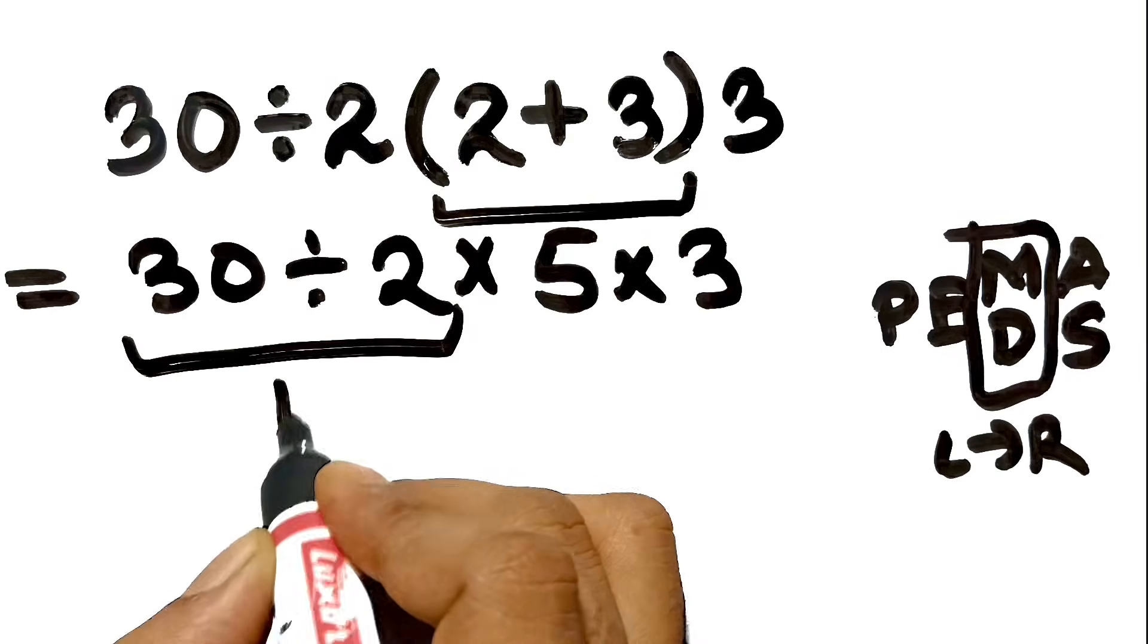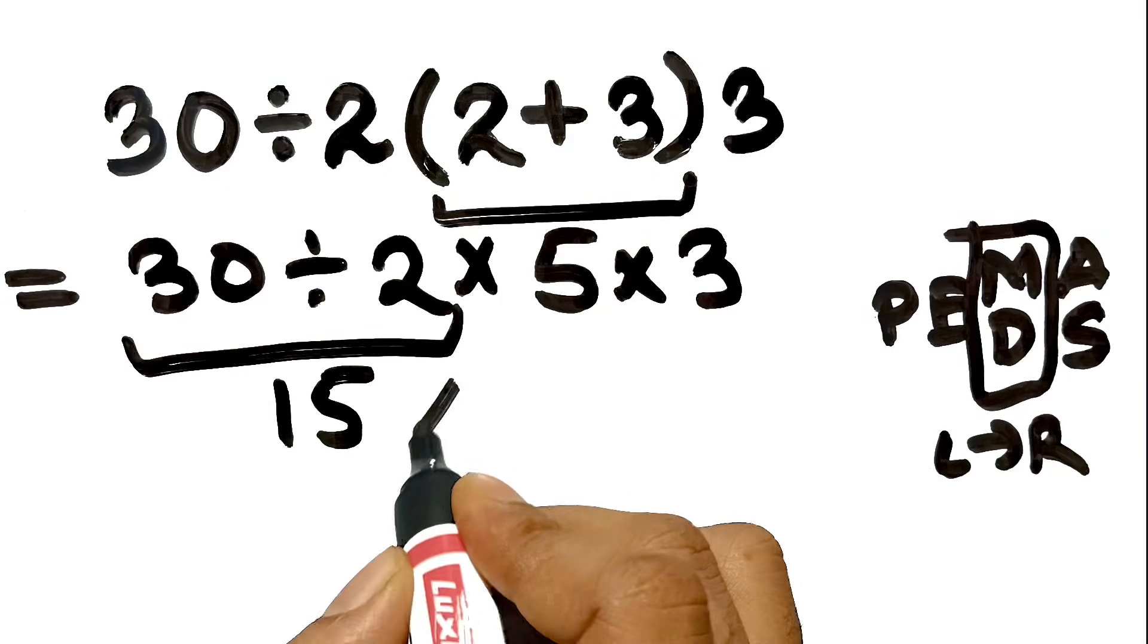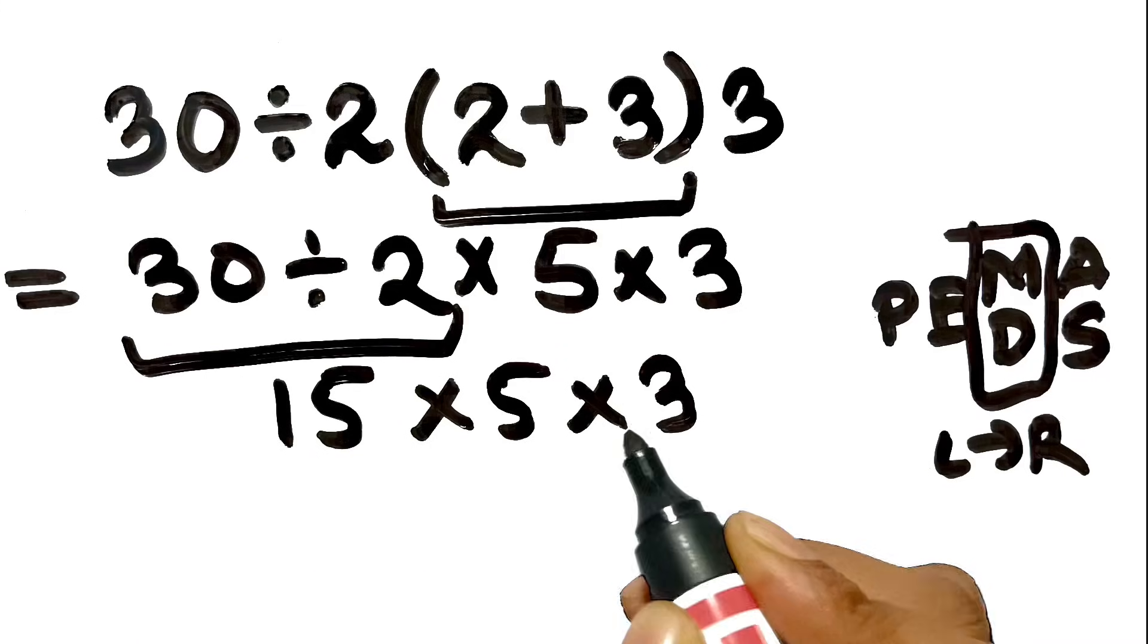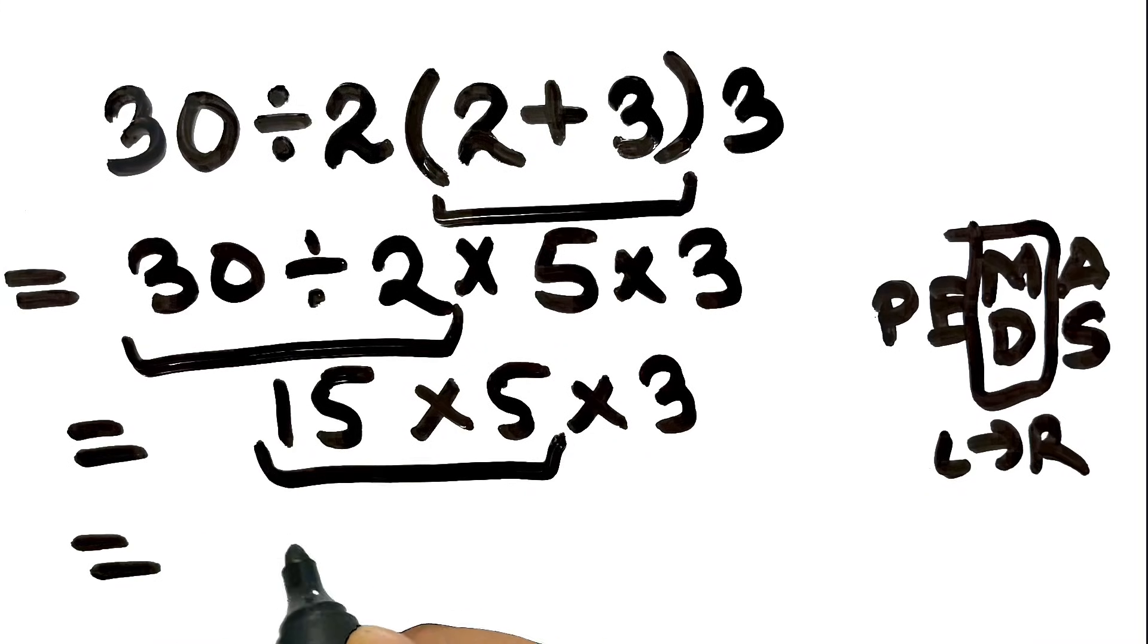30 divided by two gives us 15. Now we have 15 multiplied by five multiplied by three. Next, 15 multiplied by five gives us 75.